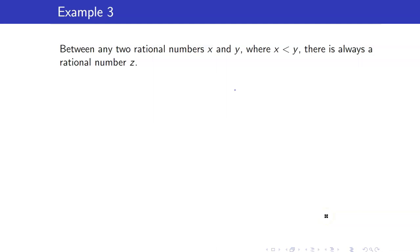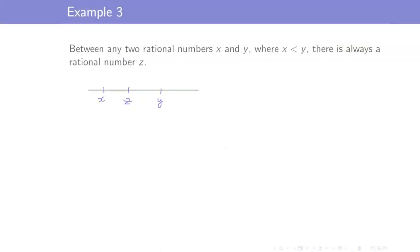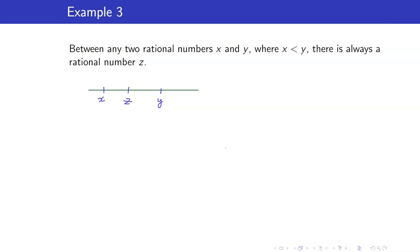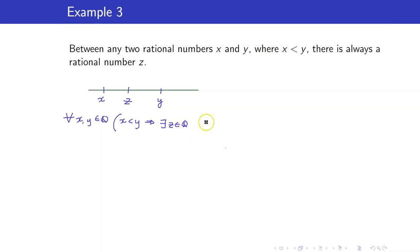Next, between any two rational numbers x and y where x is less than y, there is always a rational number z. Let us first write this using symbols. We have: for all x, y in Q where x is less than y, there is always a rational number z. This means: if x is less than y, then there exists a z in Q such that z is between x and y. It's very important to write the statement using symbols because this will guide you in how to proceed with your proof.